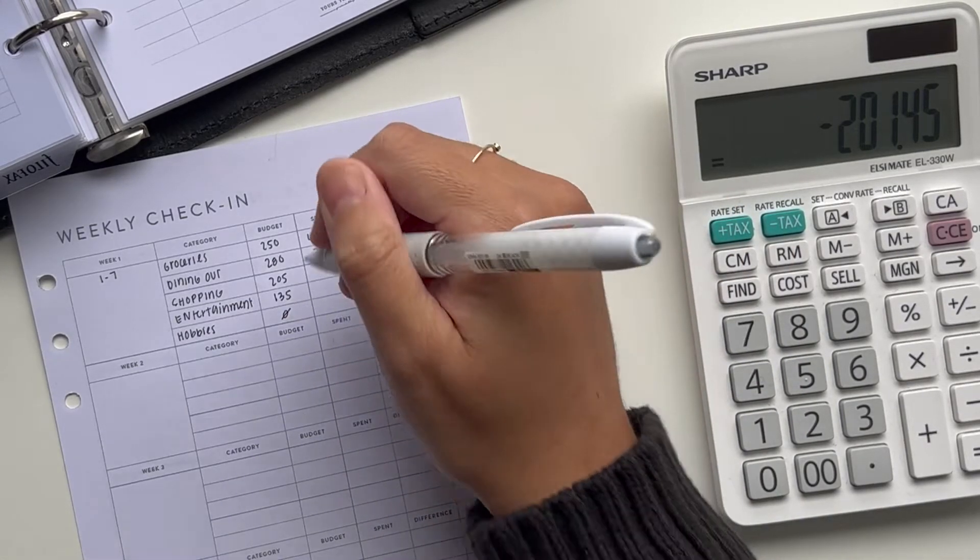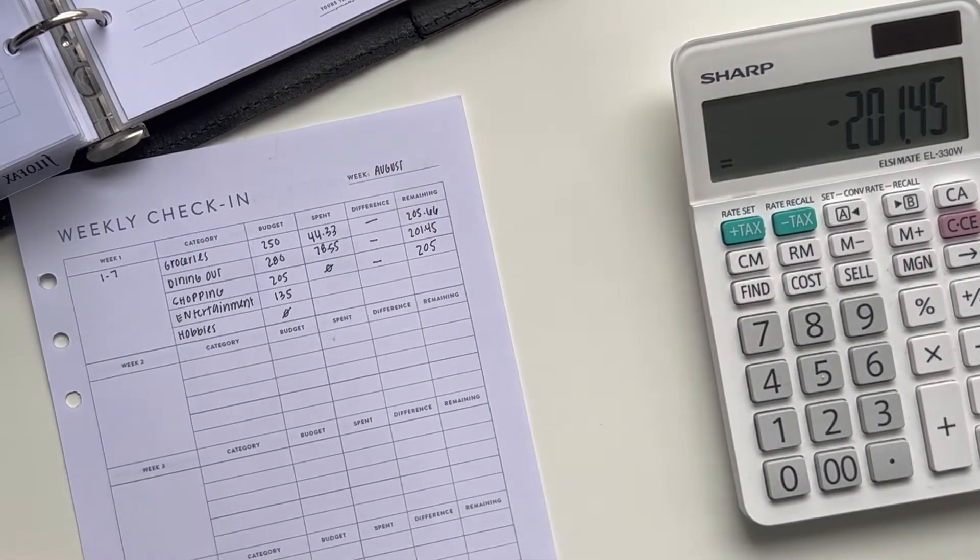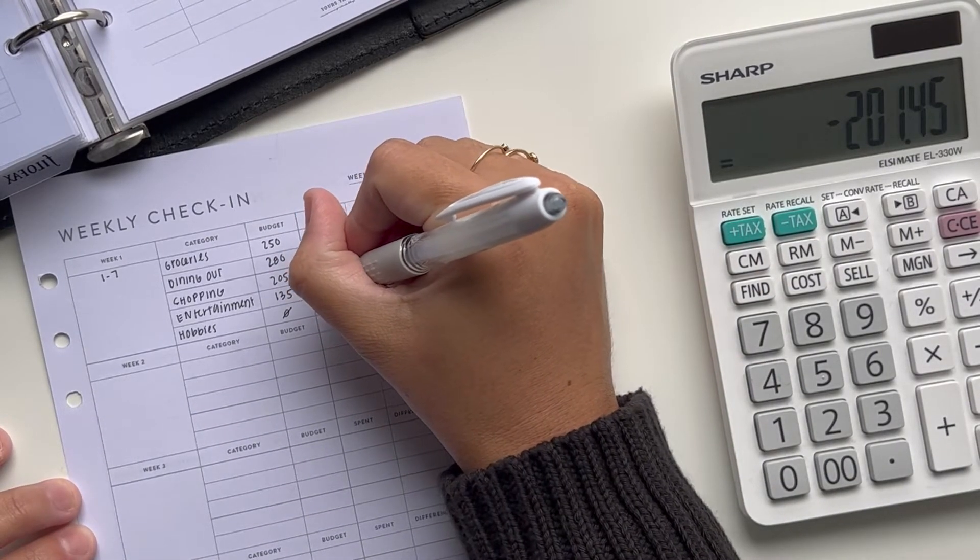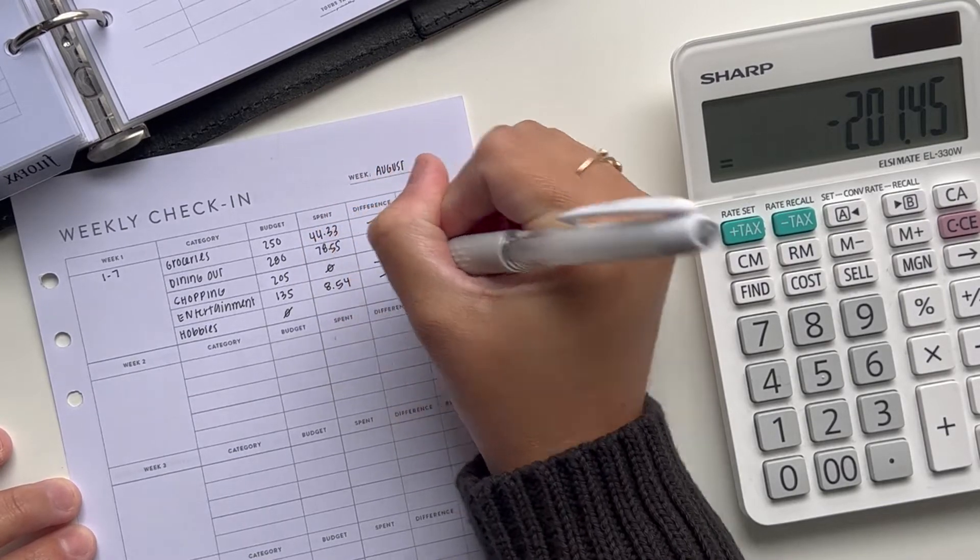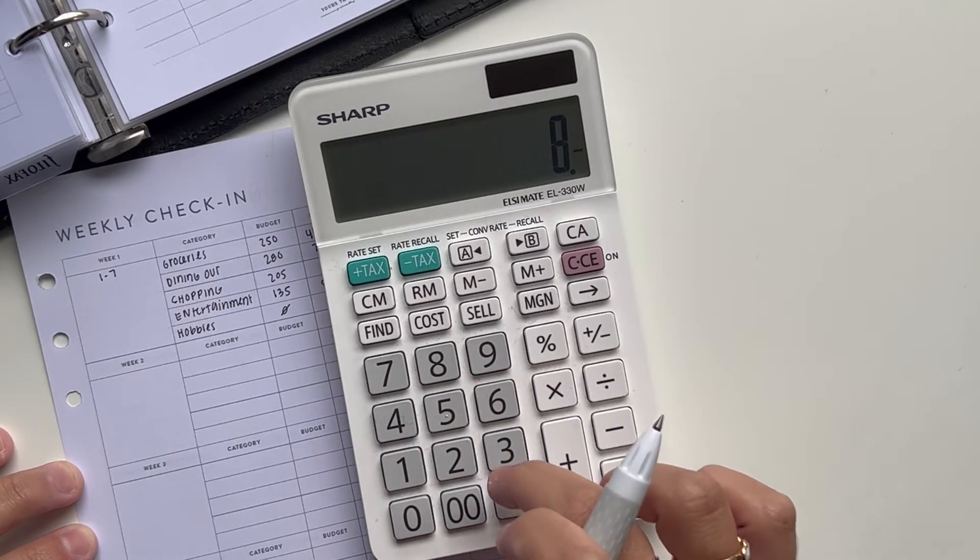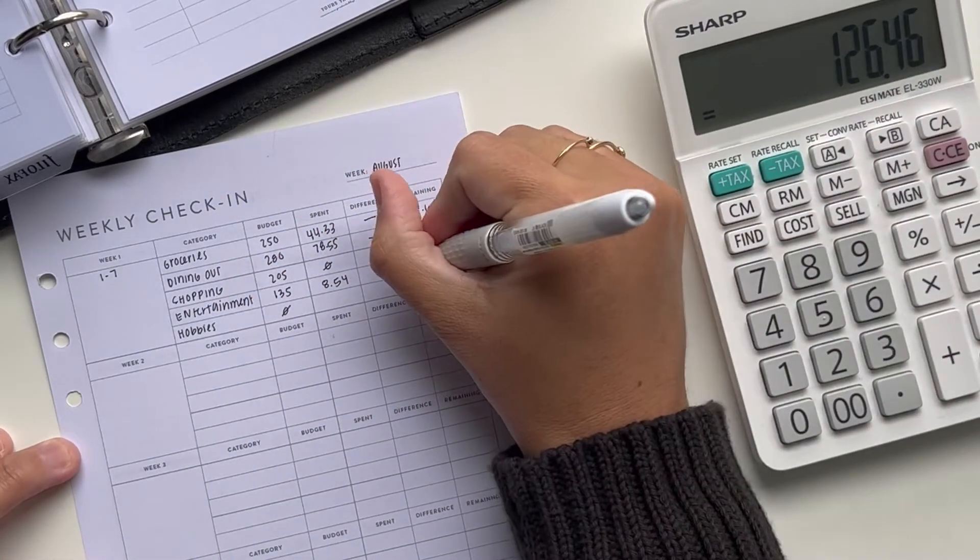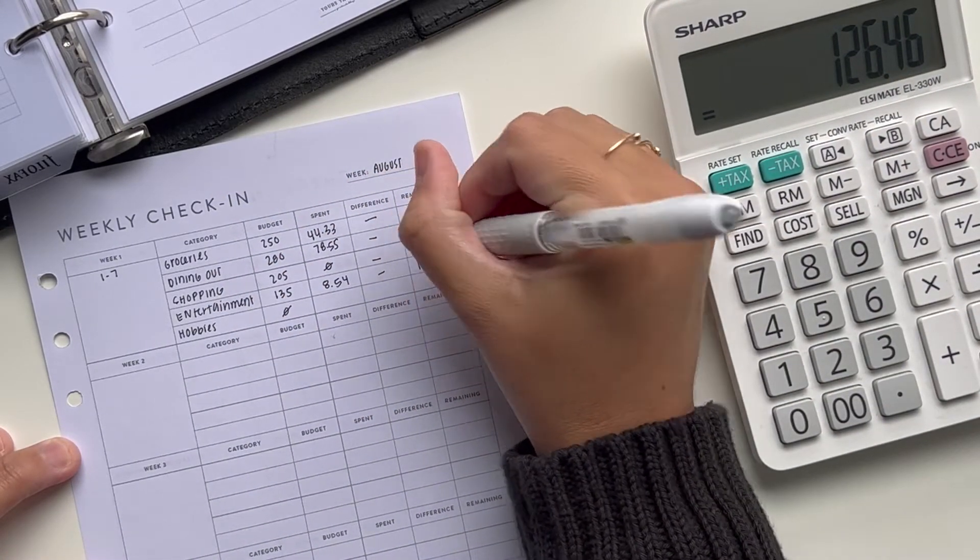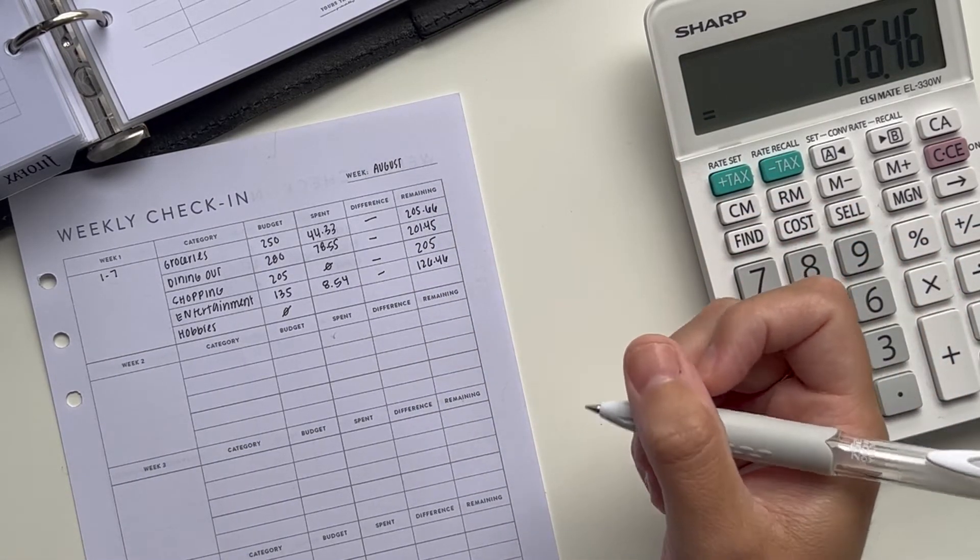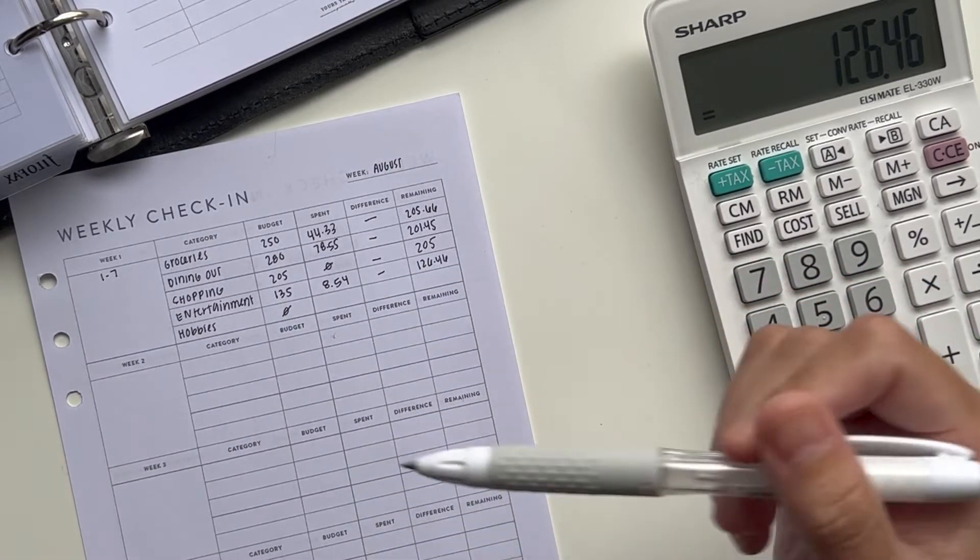Shopping, there was no shopping done. So I still have the full $205 left. Entertainment, I only had one transaction for $8.54. So if I do $135 minus $8.54, means I have $126.46 left. That was just for, we went to go see the movie Nope, and that was our snacks, my half of the snacks. I think the entertainment category will see more charges later in the month.